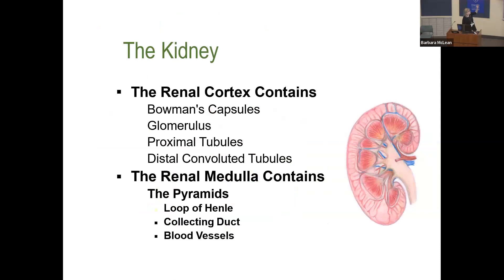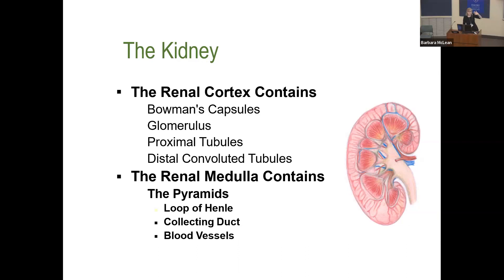I'll divide the kidney into two parts: the cortex and the medulla. The cortex is where the glomerulus primarily resides, along with the proximal tubule — exiting from the glomerulus — and the distal tubule, far from the glomerulus. The cortex is primarily driven by blood volume and blood pressure.